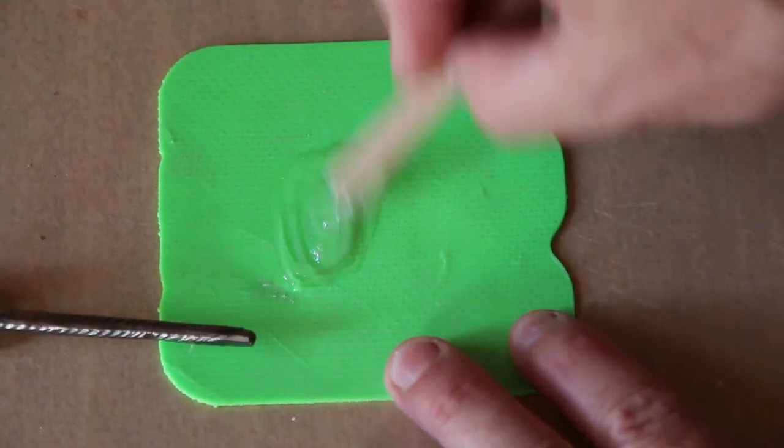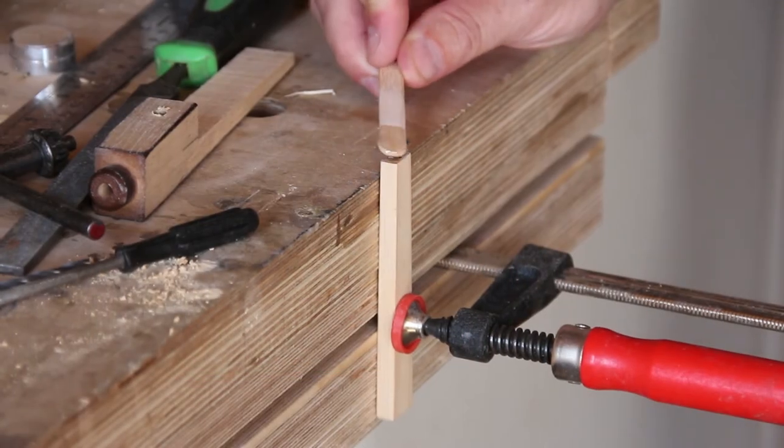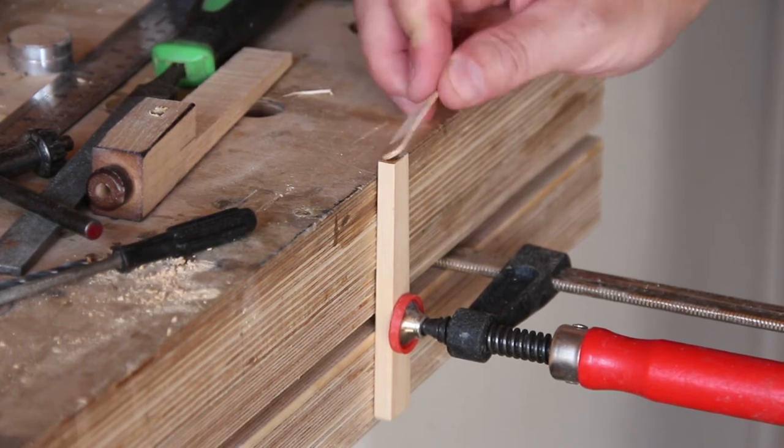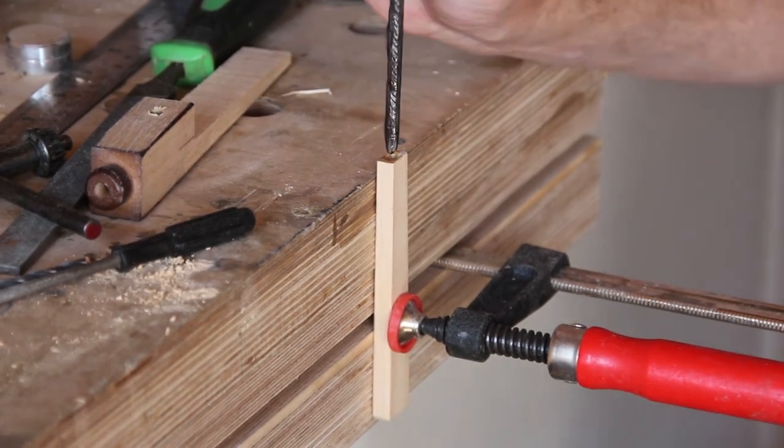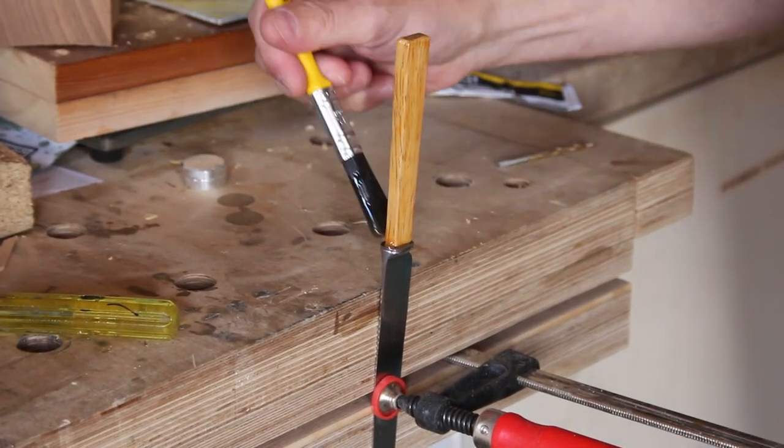I'm going to glue the knife onto the handle using some two-part epoxy. Finally I'll give the handle three coats of yacht varnish.